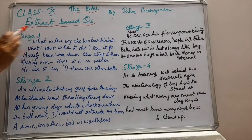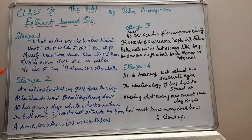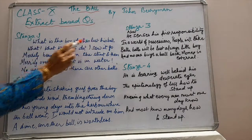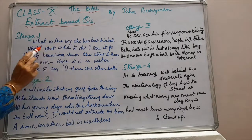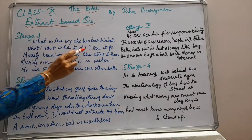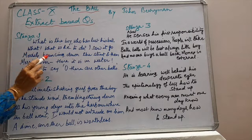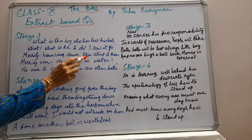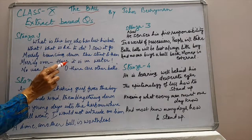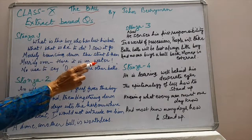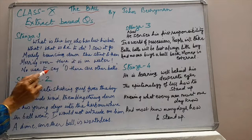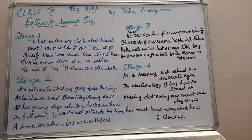Here are questions based on extracts. These questions are going to further clarify the poem to you. Stanza 1: 'What is the boy who has lost his ball? What is he to do? I saw it go, merrily bouncing down the street and then merrily over — there it is in the water. No use to say oh there are other balls.'